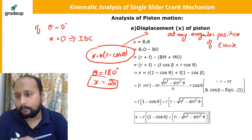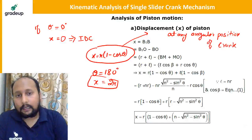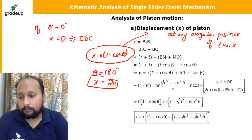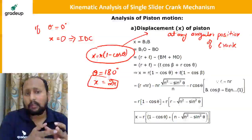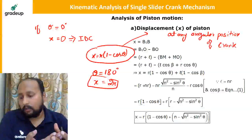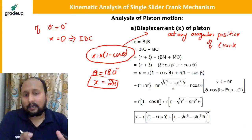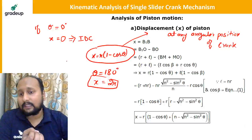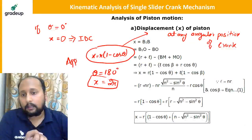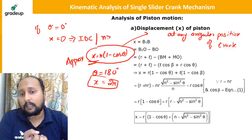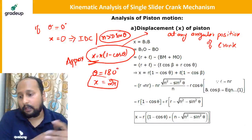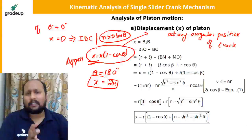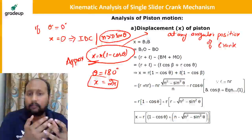Now let's talk about the velocity of the piston. Velocity v = dx/dt. Our x is a function of theta, so we write v = (dx/dθ) × (dθ/dt) = (dx/dθ) × ω.